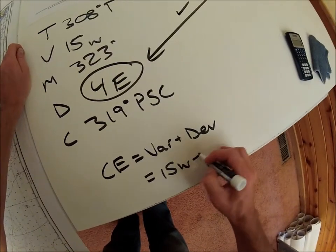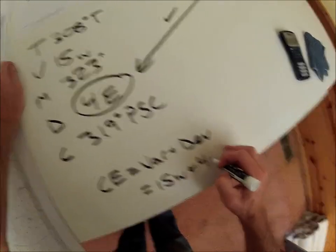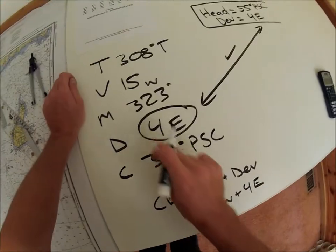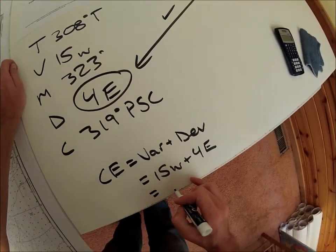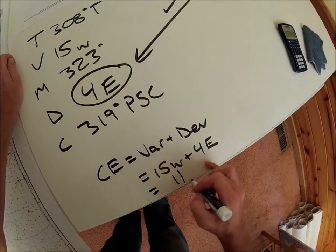What's our compass error? 15 west, 4 east. And I'm using this calculated compass error here, is equal to 11 west.